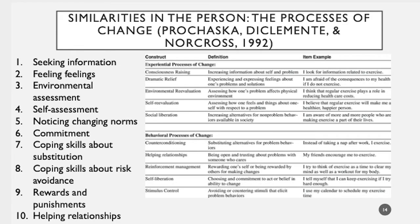This final model also speaks to similarities in people's change processes — common factors within people. This is from the transtheoretical model, called the Processes of Change model. Looking at the table, you can see each process, a definition, and a measurement item. I'm using more intuitive terms than the model uses, because they use pretty fancy terms for things we all kind of know about.